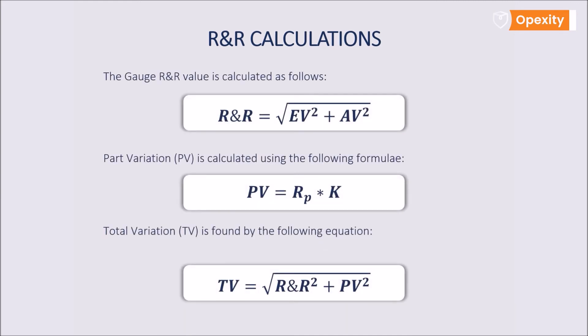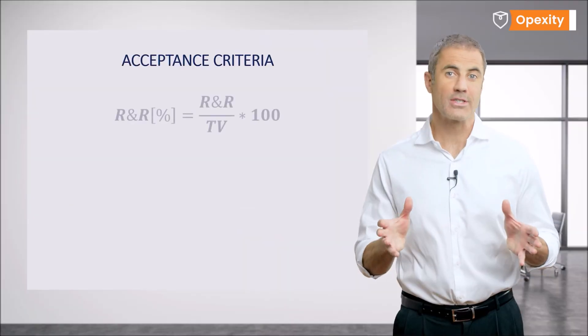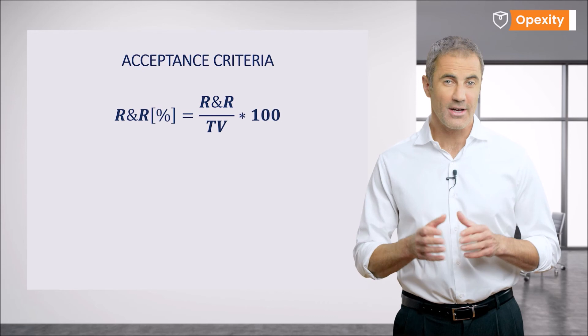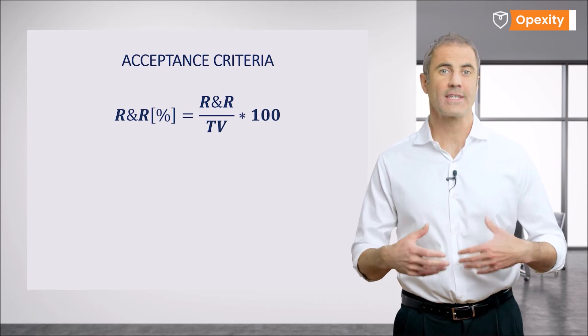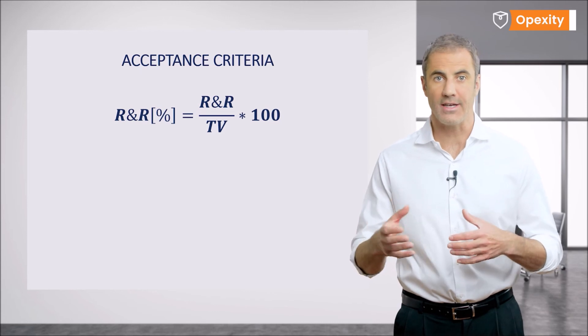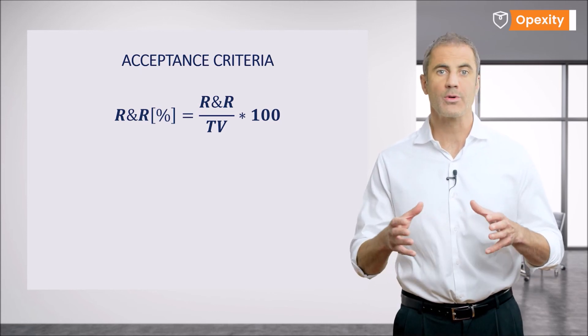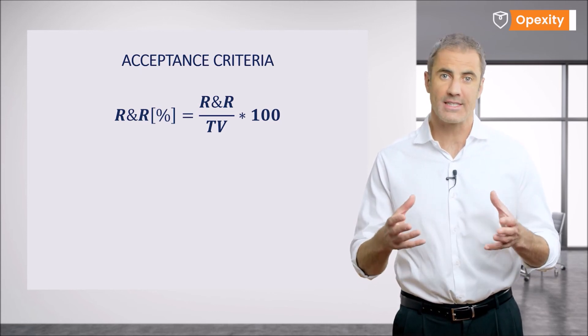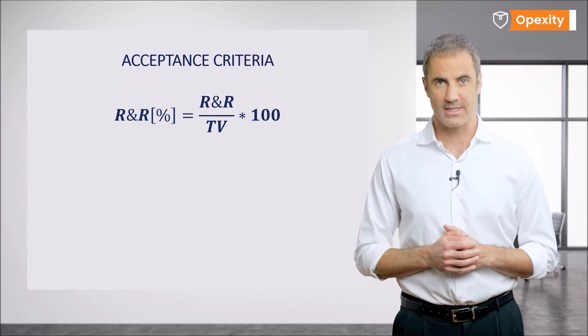Finally, we can calculate the output parameters for the measurement system that is repeatability and reproducibility R&R, part variation PV, and total variation TV. Now it's time to make an assessment. For this purpose, it is useful to calculate R&R percentage value as a ratio of R&R to TV in percentage, which will give us the opportunity to use the acceptance criteria of the measurement system.